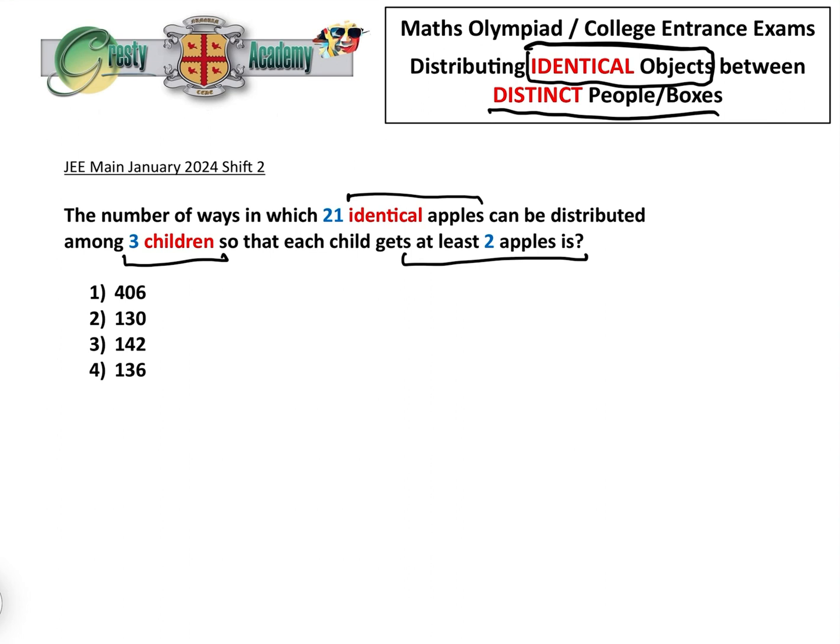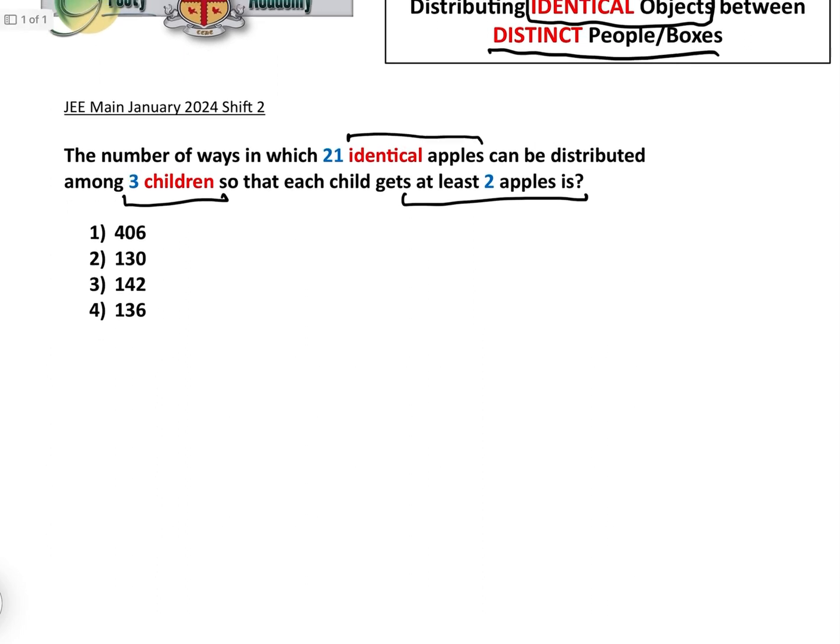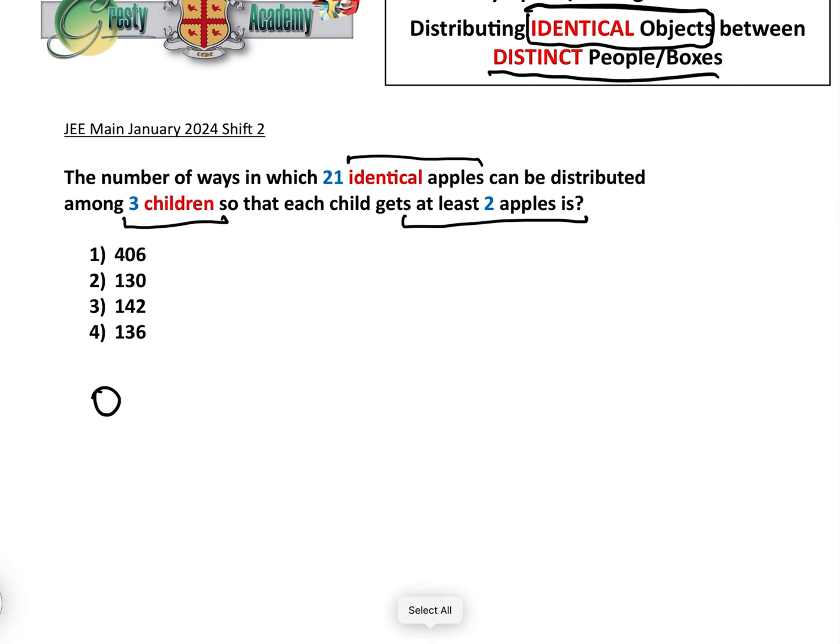Now first of all, let's just work out what it would be if we didn't have this 'so that each child gets at least two' constraint. Let's just work out how do we distribute 21 identical apples between three children. Well basically, here's our 21 apples.